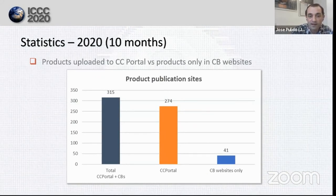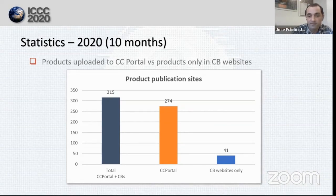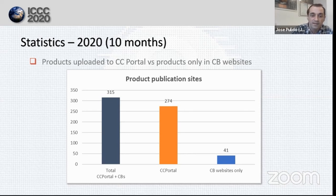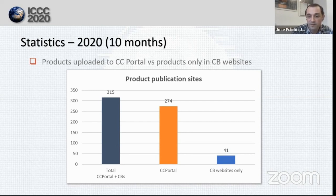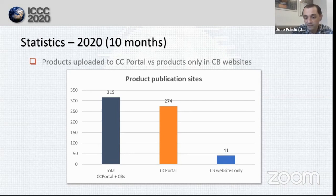There is a particular statistic that is especially interesting for us as creators of these statistics. Since we first created the Scrapper, we noticed that not all certified products are uploaded to the Common Criteria Portal — some are published just on the website of the corresponding national certification body. This chart shows that from 315 products certified in 2020, 274 are published in the Common Criteria Portal, but 41 products are published only on the website of the certification body. This means that 86% of total certified products are listed in the Common Criteria Portal. Why don't we aim for 100%?